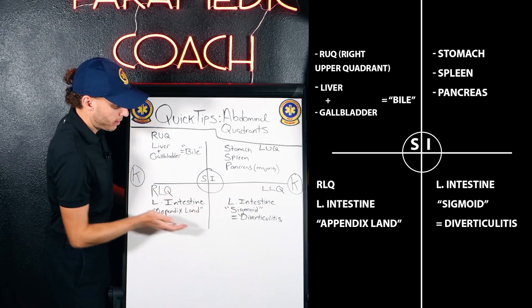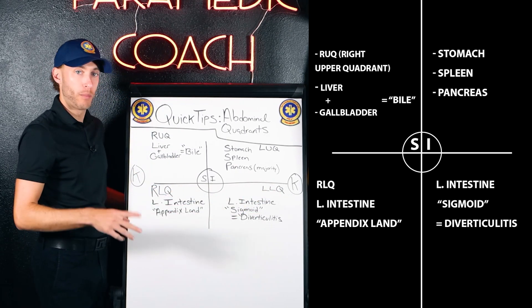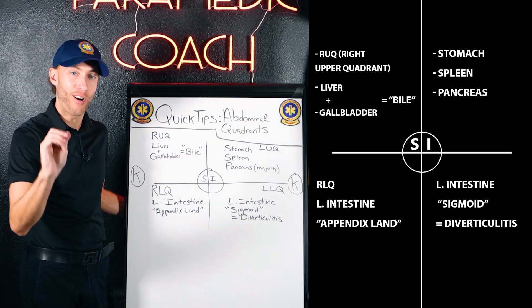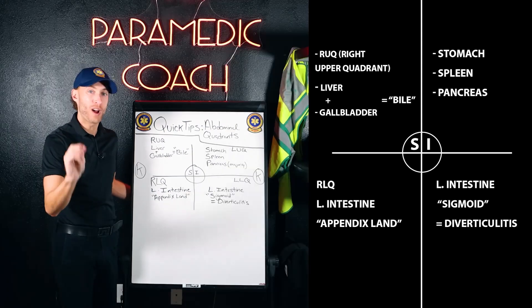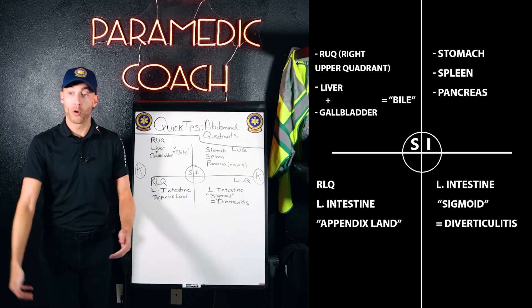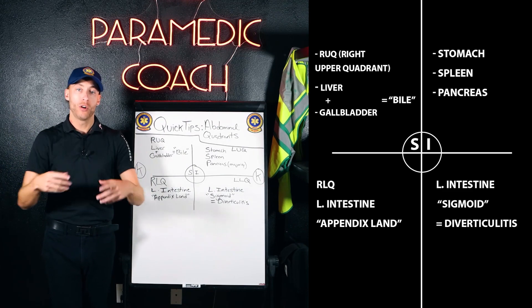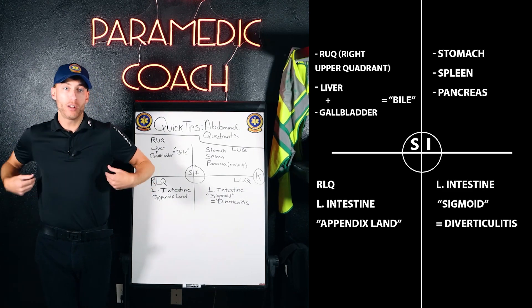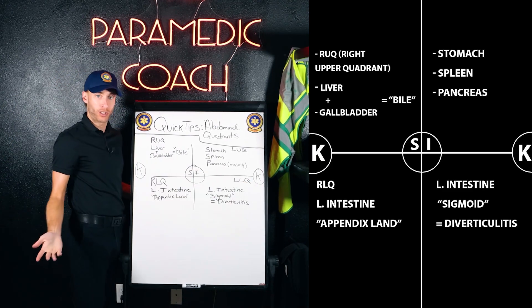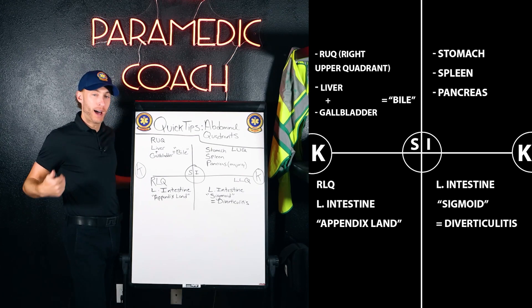Of course we have female reproductive organs in the lower quadrants. One more thing — where are the kidneys? They are retroperitoneal. Retro means behind, so retroperitoneal means the kidneys — you can see the K here — those are going to be behind.